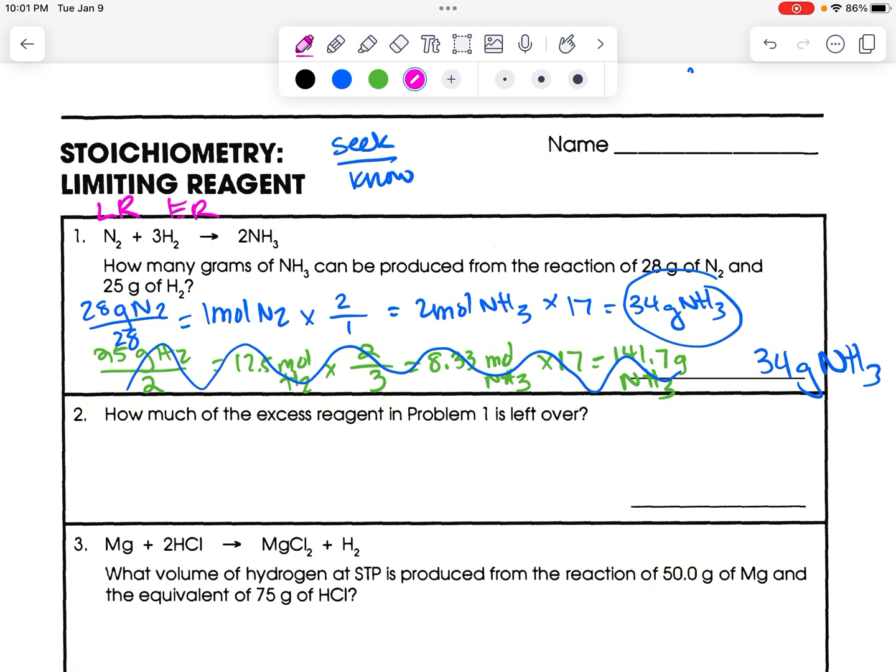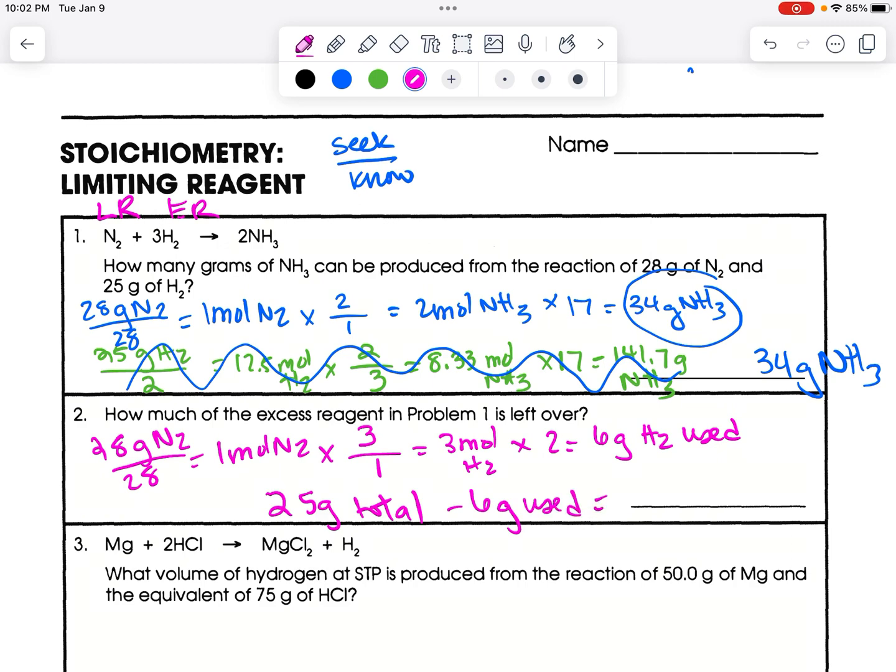So it says how much of the excess reagent is left over. So again, I have the 28 grams of nitrogen, 28 equals 1 mole, then 2. So let's compare the limiting to the excess. So now I seek how much hydrogen did I actually use? So we seek hydrogen this time, which is 3, over nitrogen, which is 1. So 3 moles hydrogen, GFM of H2 is 2. So 6 grams of H2 was used in the reaction. So we had 25 grams total minus 6 grams used, which means we are left with 19 grams, which is in excess.